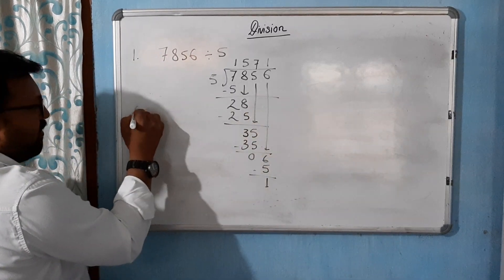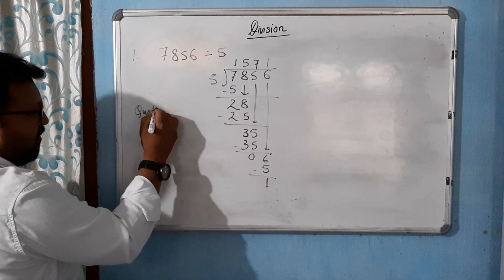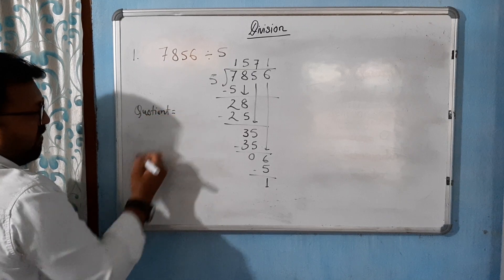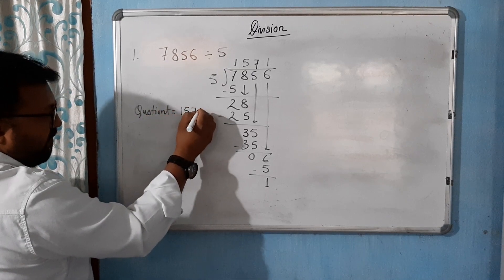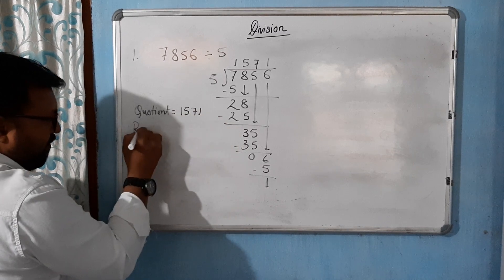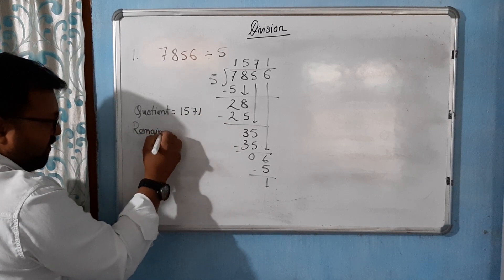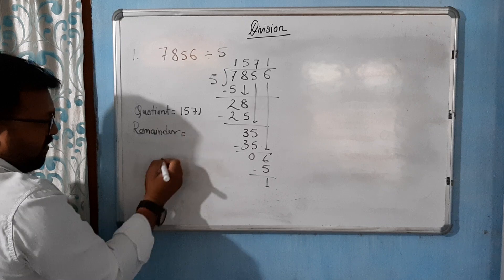Here we can see our quotient is equal to how much? 1571. And remainder is how much?